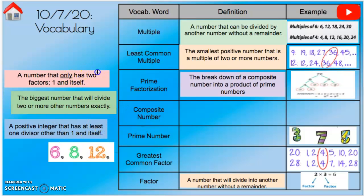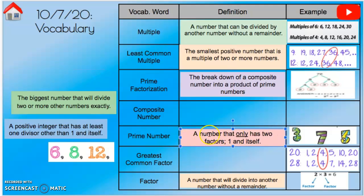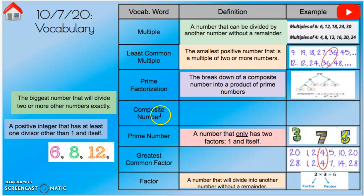Prime numbers are numbers that have only two factors: one and itself. The examples given are three, seven, and five — those are all prime numbers. The factors of three are only one and three; one times three equals three, nothing else. Same thing with seven: one and seven. Same thing with five: one and five.